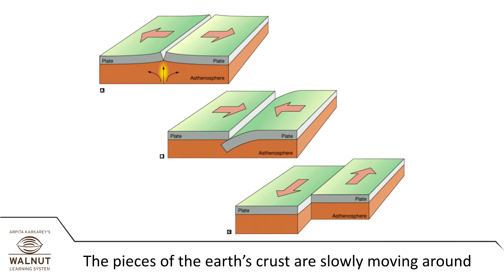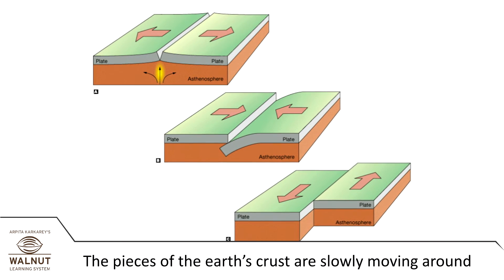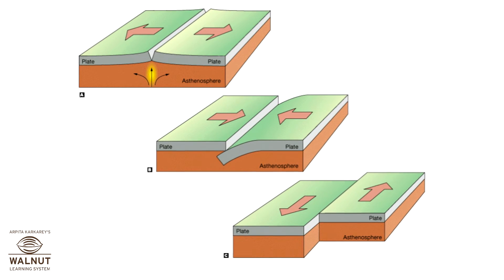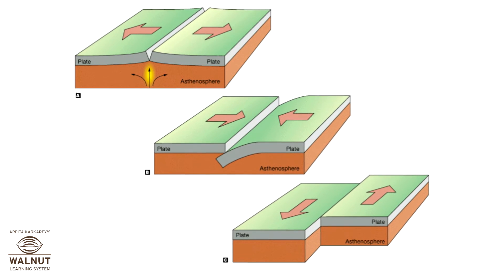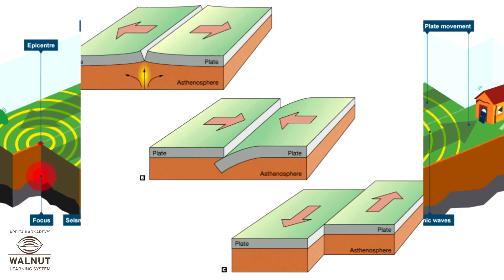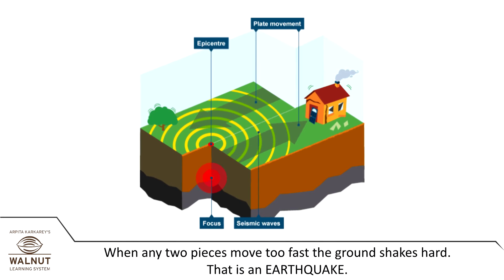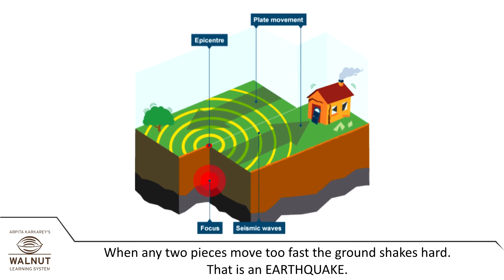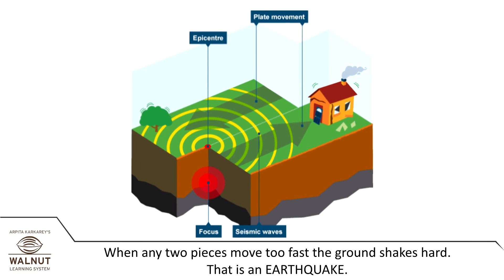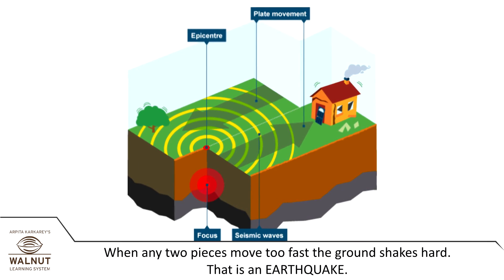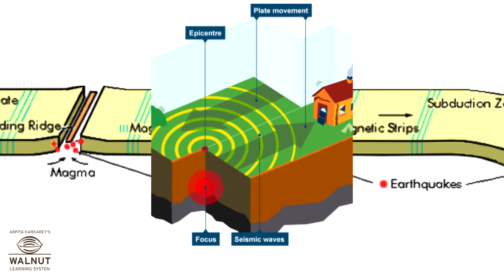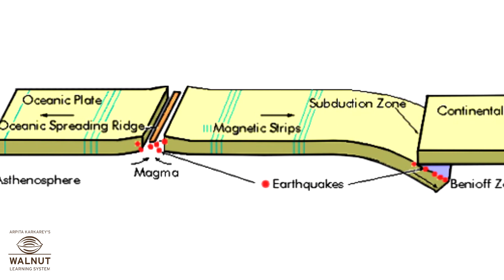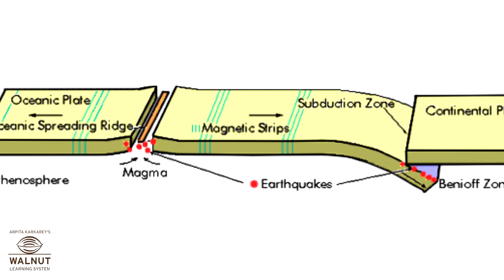These puzzle pieces of the Earth's crust keep slowly moving around, sliding past one another and bumping into one another. When any two pieces bump too fast or move away too fast, the ground shakes hard. This is an earthquake — it happens along the line where those two pieces are joined together.